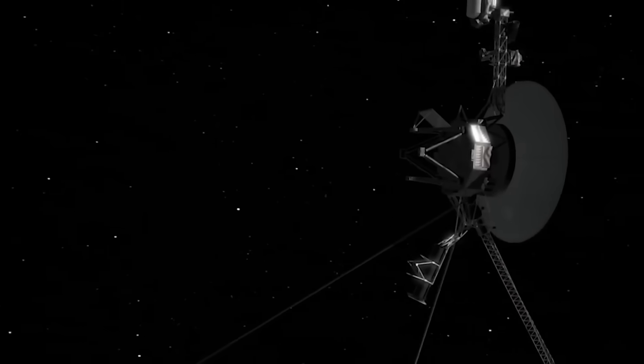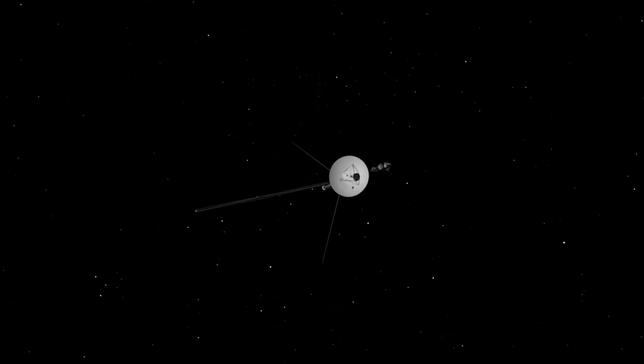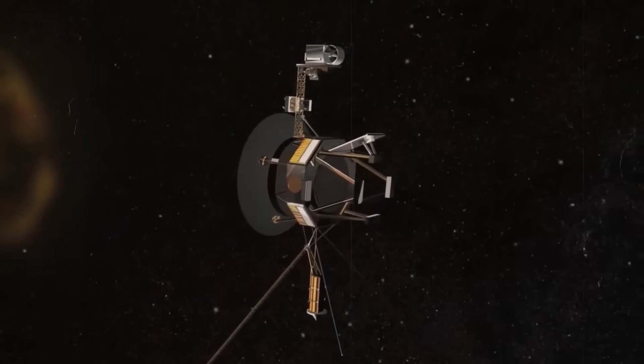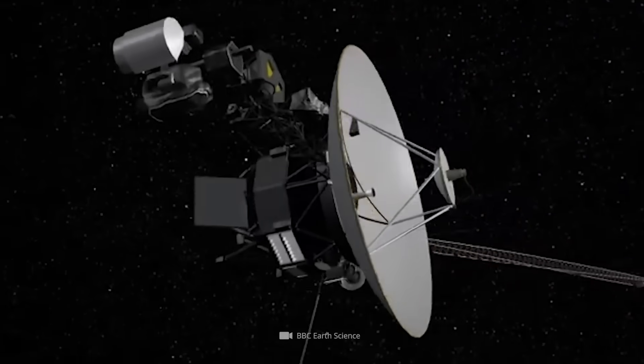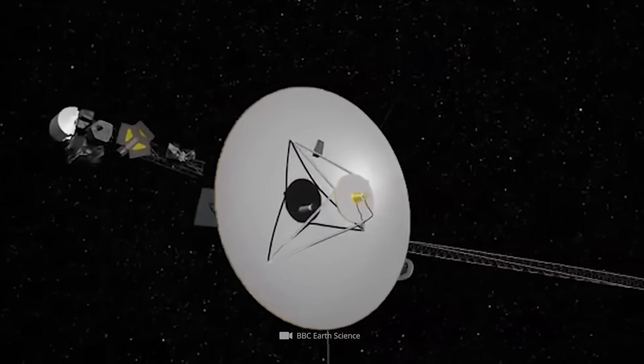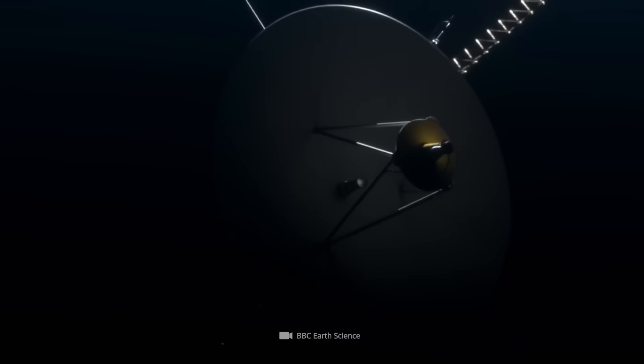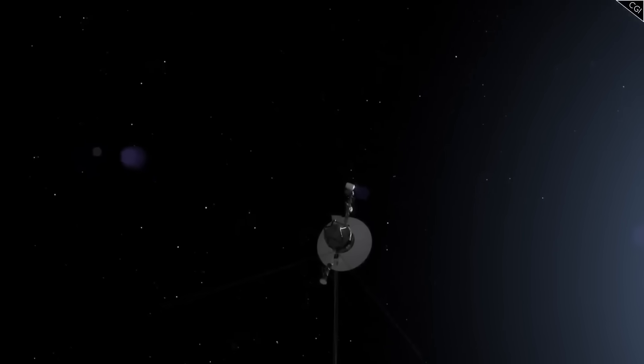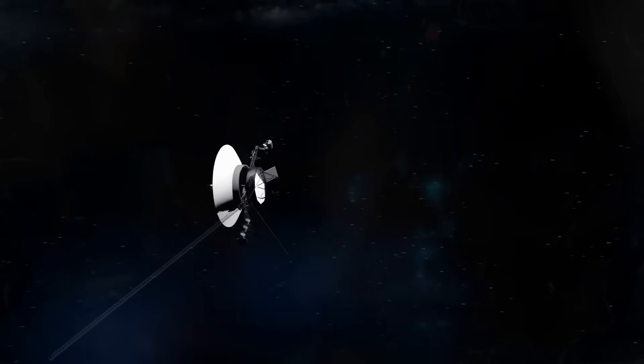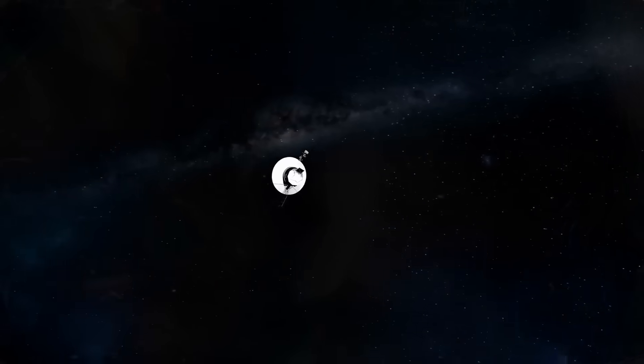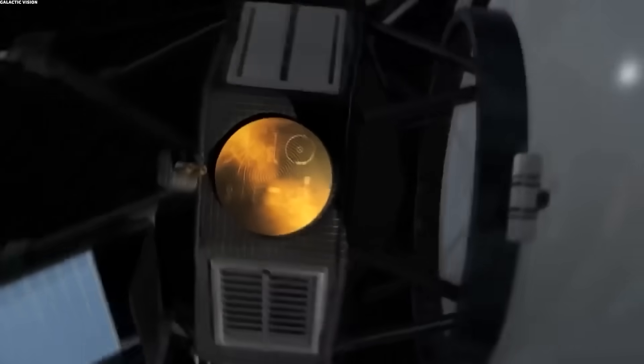But when contact was re-established, Voyager 1 returned to normal as if nothing had happened. All systems appeared fine, power levels stable, but embedded deep in the diagnostic report was something that shouldn't be there: a time-stamped gap that couldn't be accounted for, and a sequence of data packets marked with an internal code that no one remembered programming. It was as if, for those 72 hours, Voyager wasn't alone. As if another system, unknown and invisible, had accessed the probe, interfaced with it, and then left without a trace, save for a trail of silence.